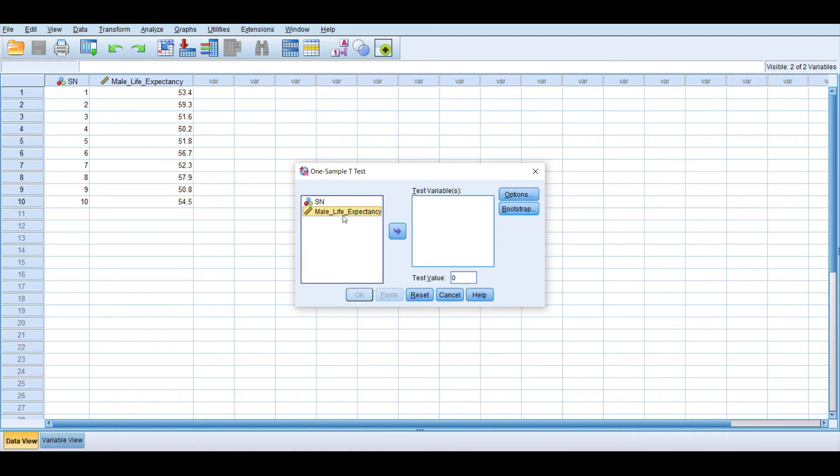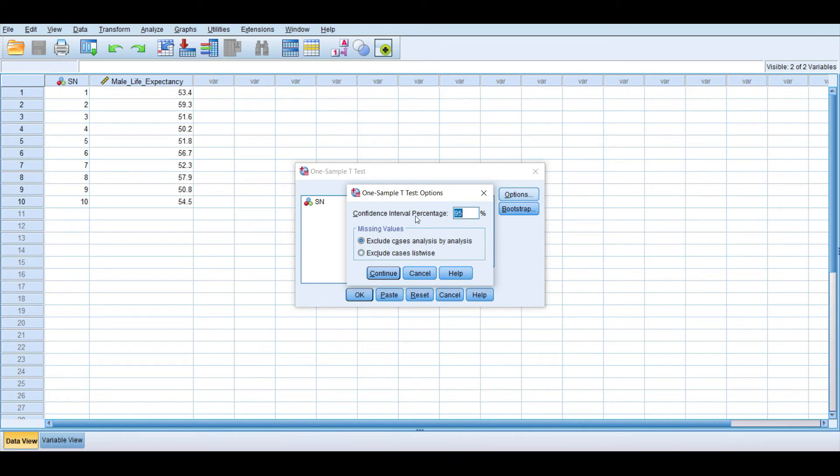Then highlight this male life expectancy and move it under this test variable box here. Click this arrow to move it under test variable box here. Then click options. We'll have our confidence interval percentage which is 95% confidence interval or which is also known as 5% level of significance. So we're using this as default. We'll click continue.